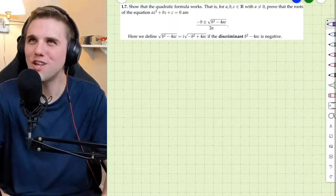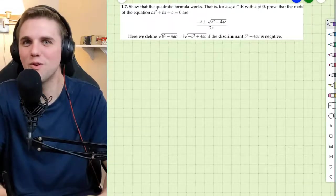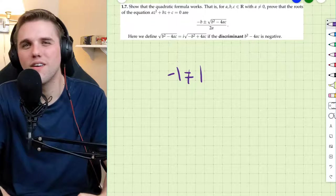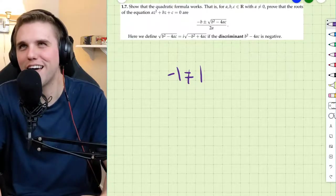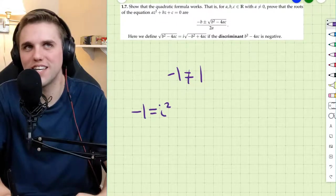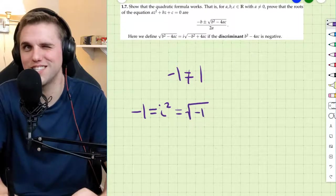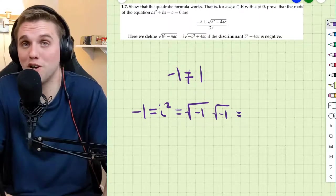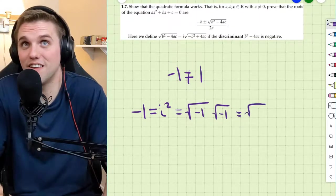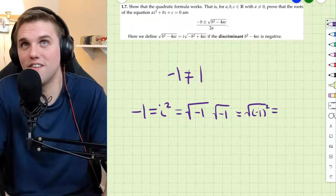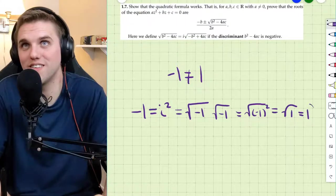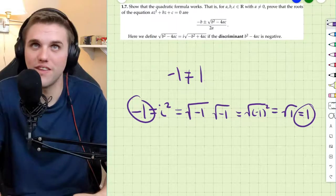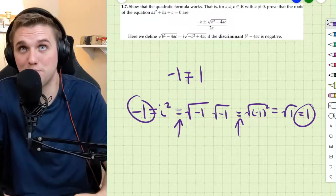And none of them really wants to understand why it is that negative 1 doesn't equal 1, despite the fact that negative 1 is i², which supposedly is the square root of negative 1 times the square root of negative 1, which by properties of the square root function is the square root of negative 1 squared, which is the square root of 1, which is 1. Yeah, red flags. What happened?